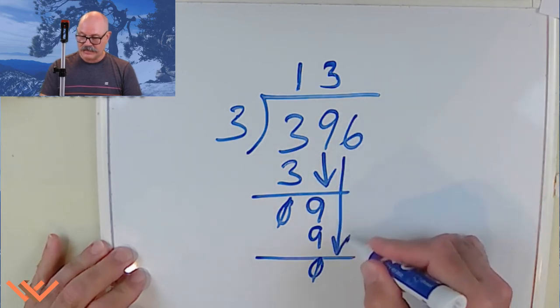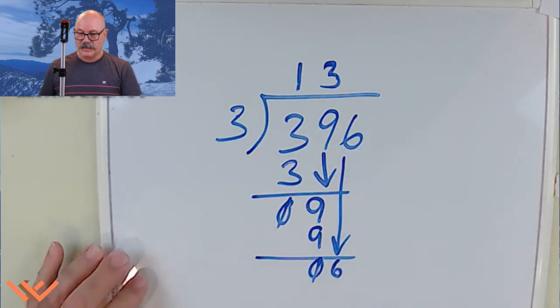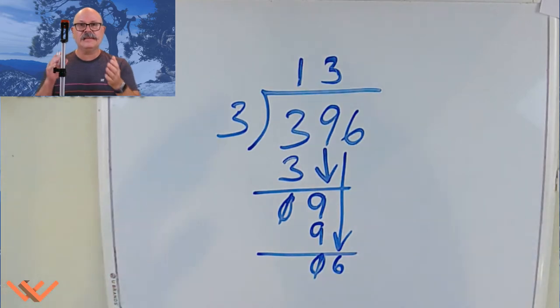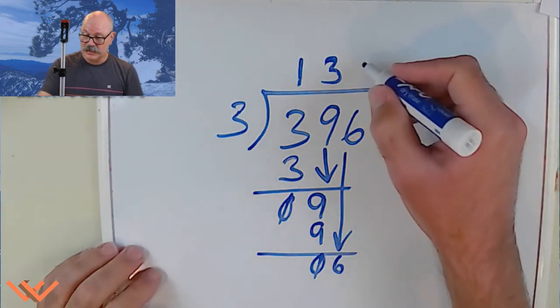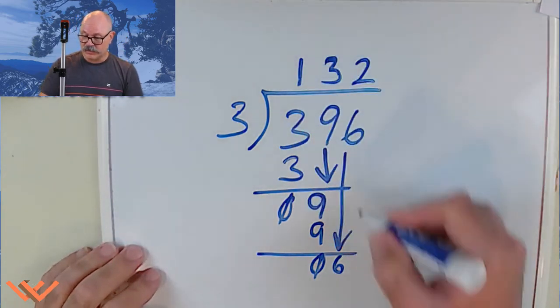Zero that out. I bring down that six. How many threes go into six? Well, we already did it. Three times two is six. So it's two.